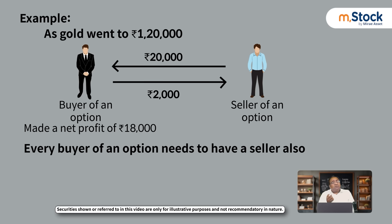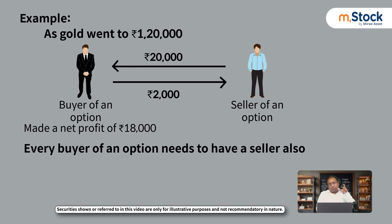Every buyer needs a seller, so he was the seller of the option premium. He was selling the option premium because he had the view that gold may not go above one lakh. But what happened was gold went above one lakh — it went to 1 lakh 20 — so he ended up paying me and I ended up with a gain. The option seller lost money, but in a normal scenario this usually doesn't happen.